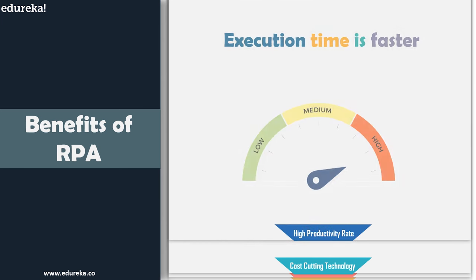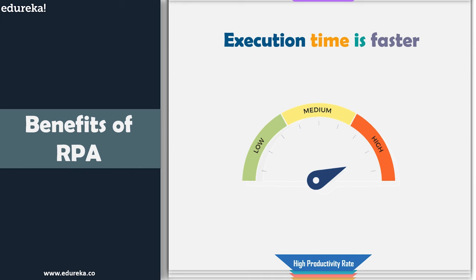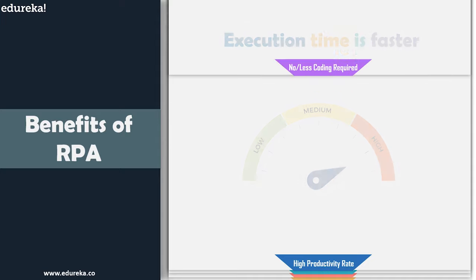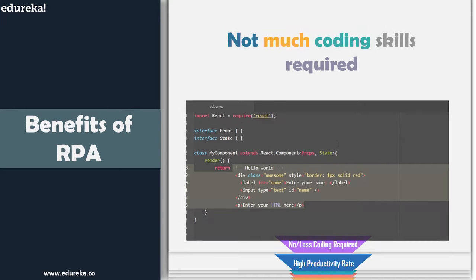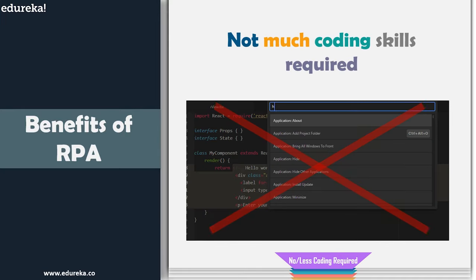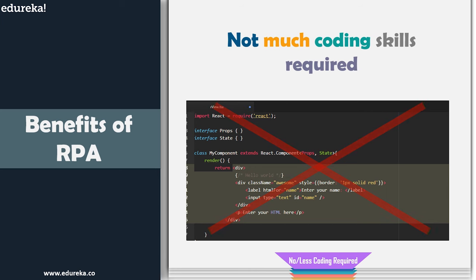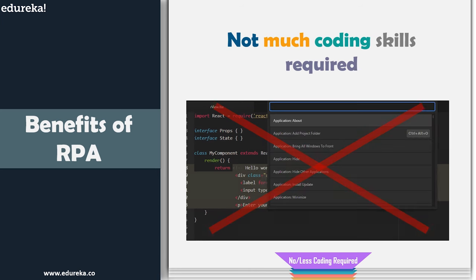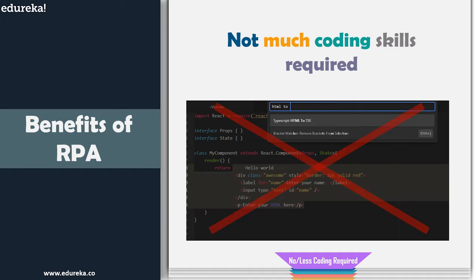RPA also increases the productivity rate. The execution time to perform any task is much faster when compared to a manual approach. Finally, no or less coding is required — RPA software doesn't require much programming knowledge, so even if you are from a non-IT background, you can definitely start your career in the field of Robotic Process Automation.